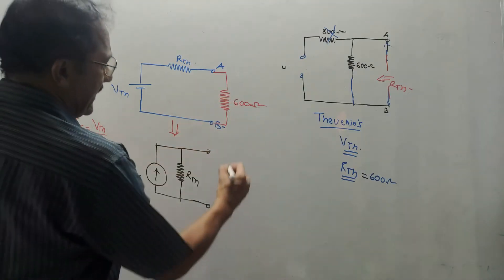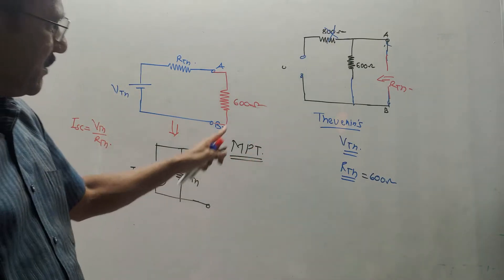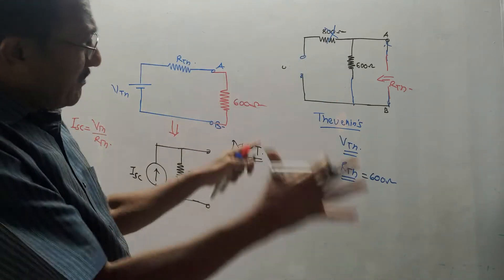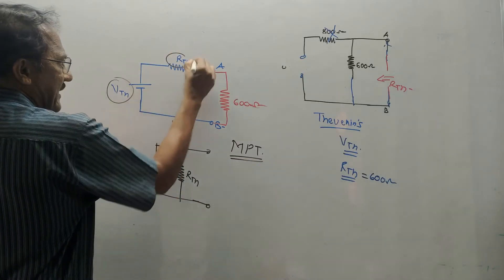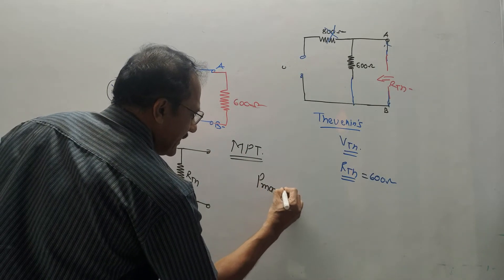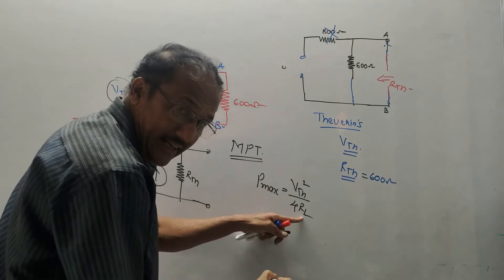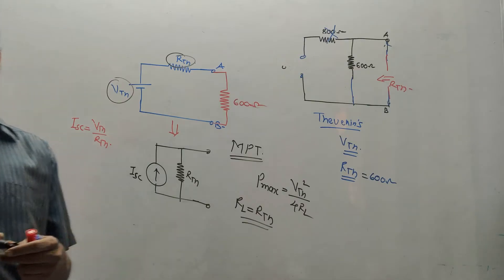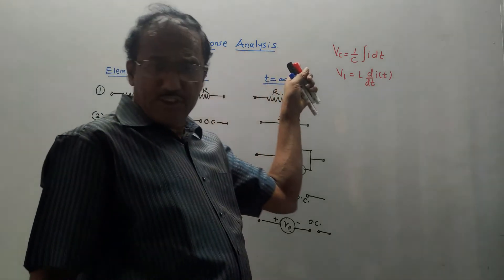The last theorem is the maximum power transfer theorem (MPT). If a numerical is asked on MPT, apply Thevenin's theorem to find Vth and Rth. Then add one extra step: maximum power equals Vth squared divided by 4RL, where the load resistance RL equals Rth under maximum power transfer condition.